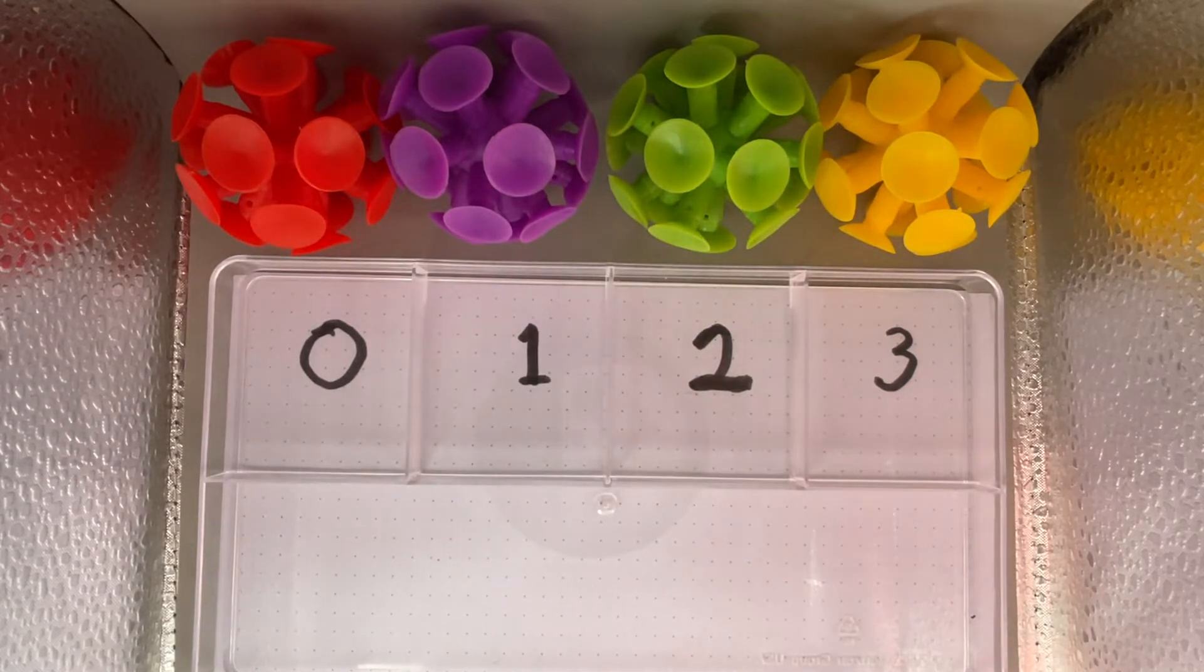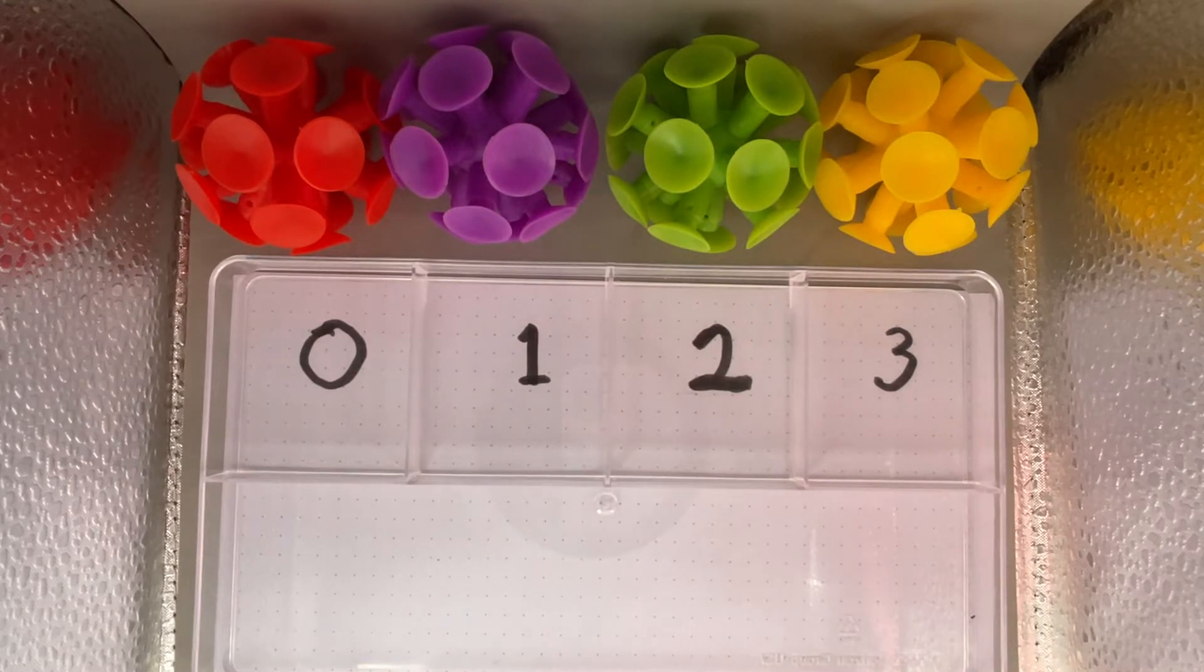In the producer-consumer problem, we have three variables. We have a buffer which can hold up to n objects. In this case, n is equal to 4.